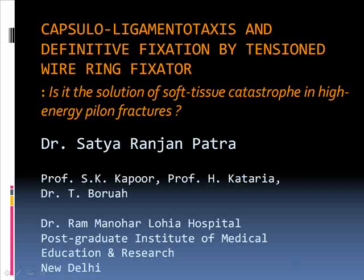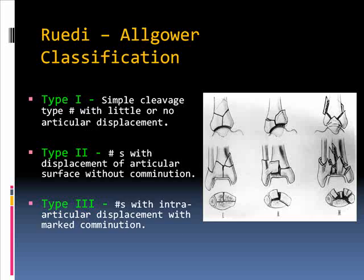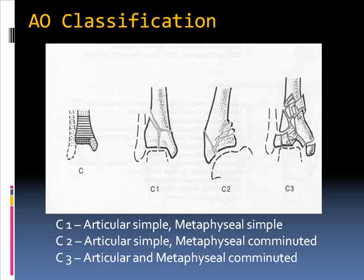These are high energy type fractures but sometimes may occur due to low energy fractures like sporting injuries. The Rudy and Al Gore classification has been very popular to classify them. Similarly, the AO group have classified them as types C1, C2, and C3, where types C2 and C3 belong to the high energy group.